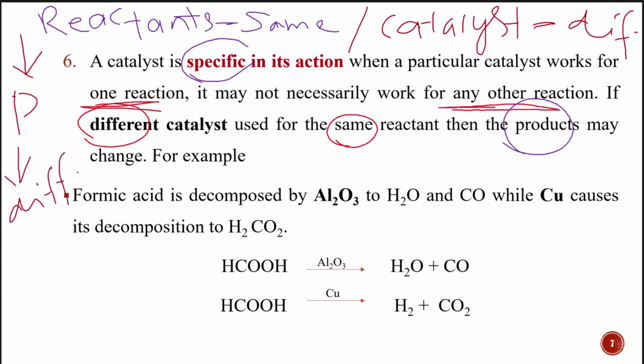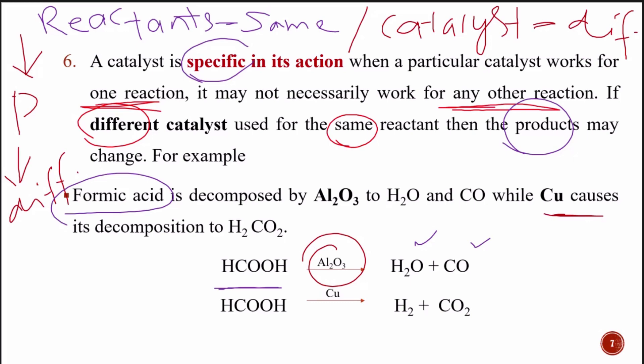For example, formic acid (HCOOH) can be decomposed in two ways. With aluminum trioxide (Al2O3) as catalyst, it decomposes to give H2O and CO (carbon monoxide). With copper as catalyst, it decomposes to give H2 and CO2.